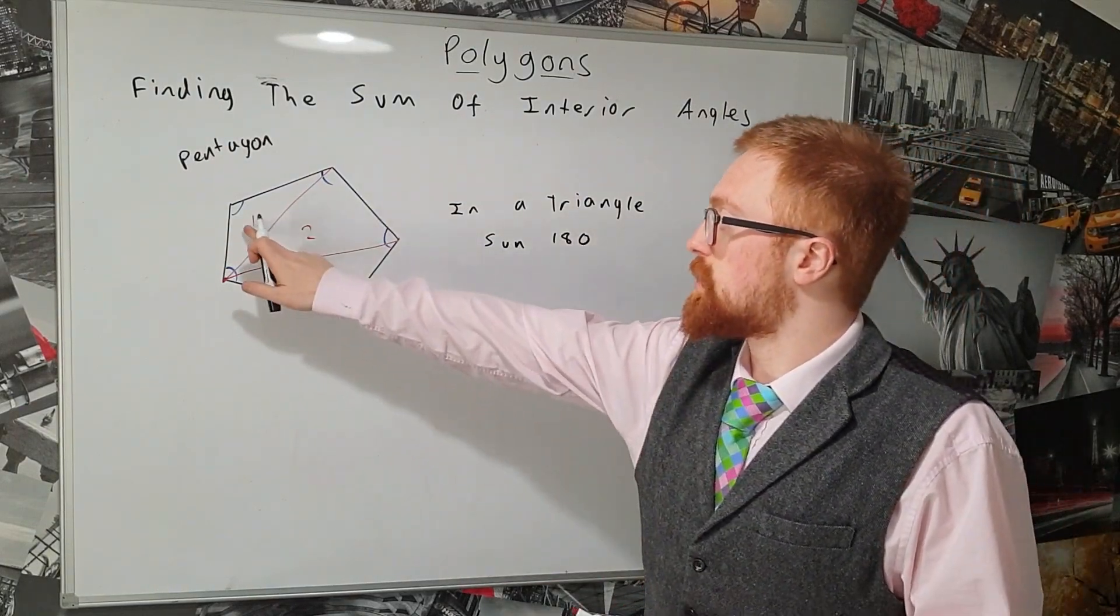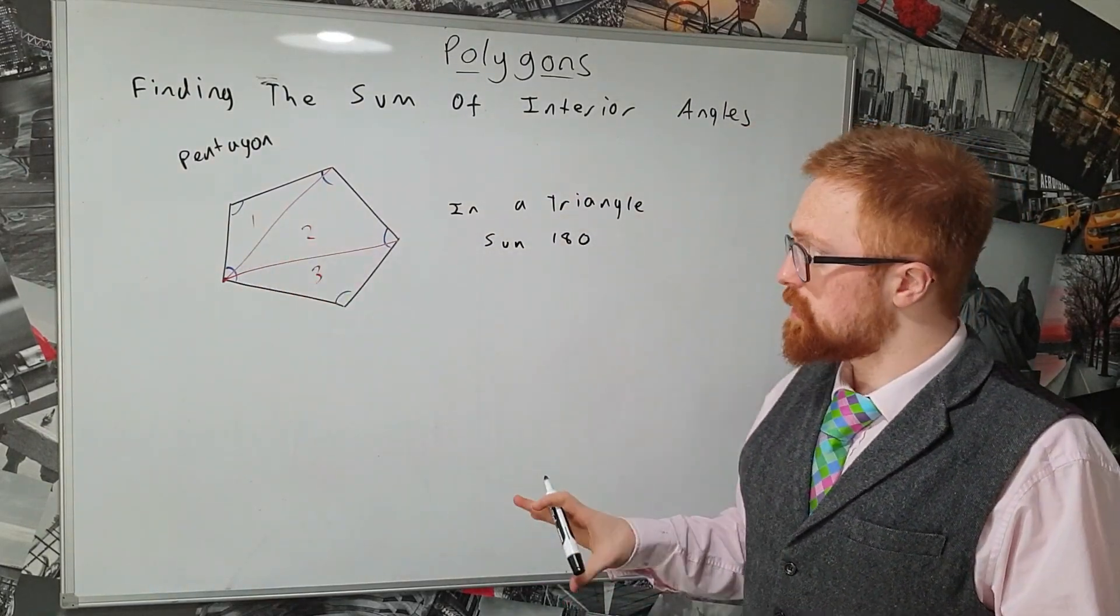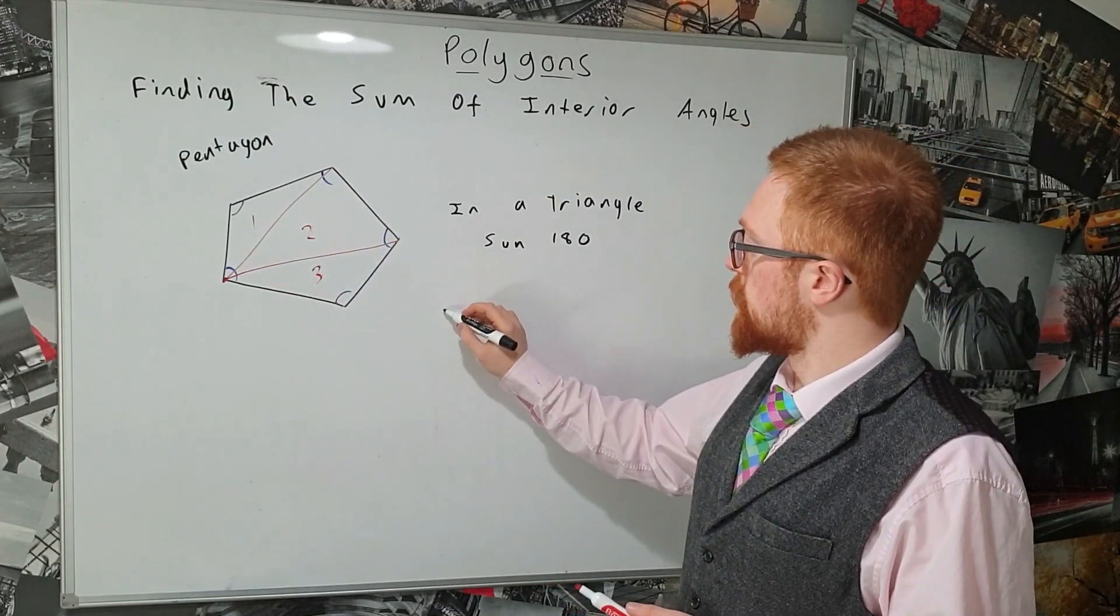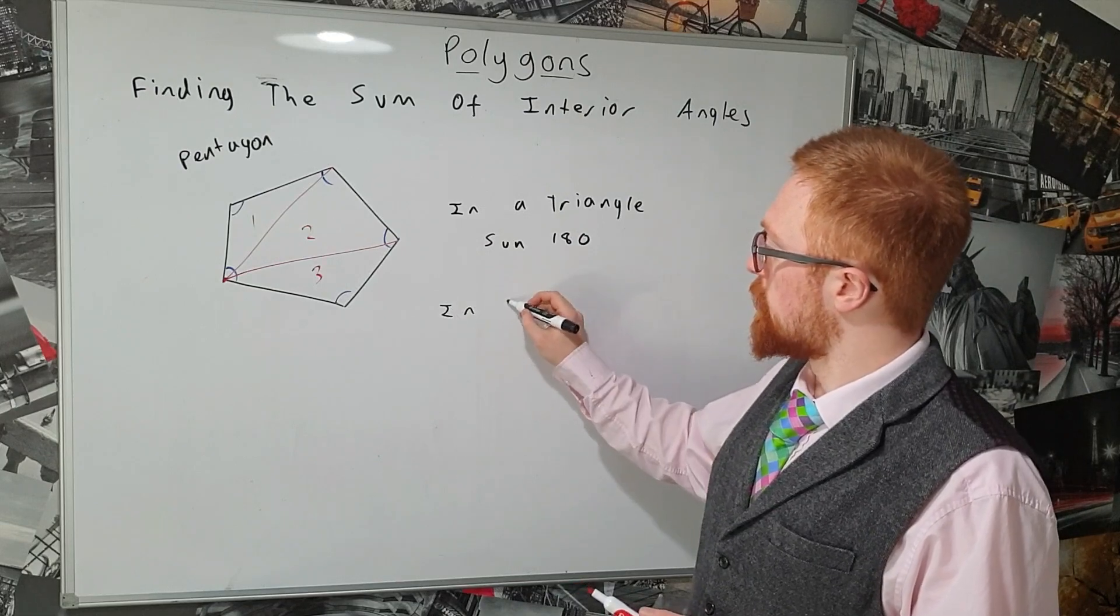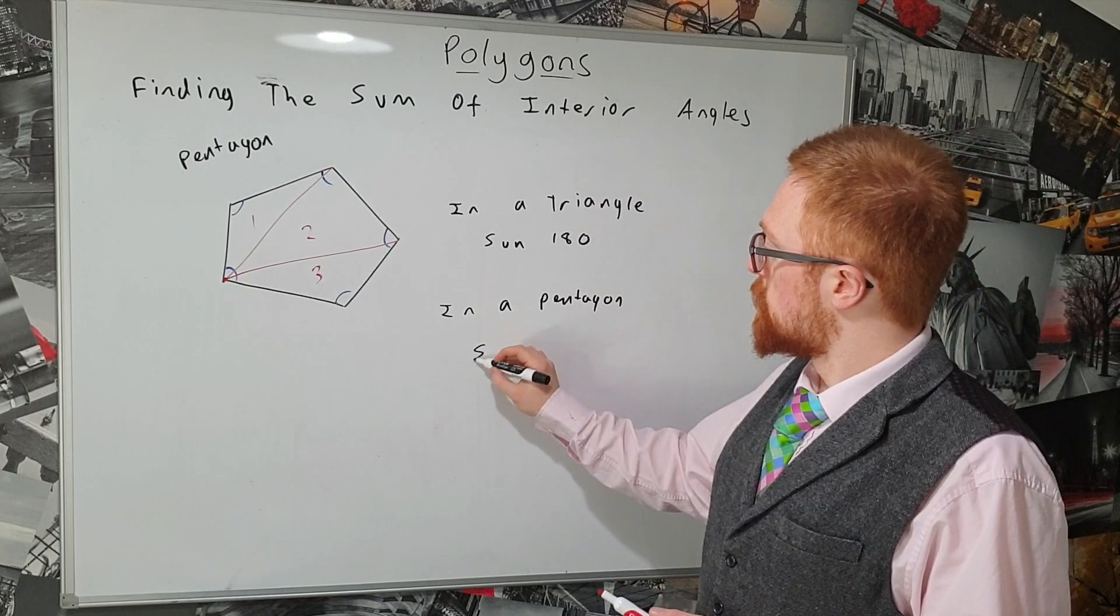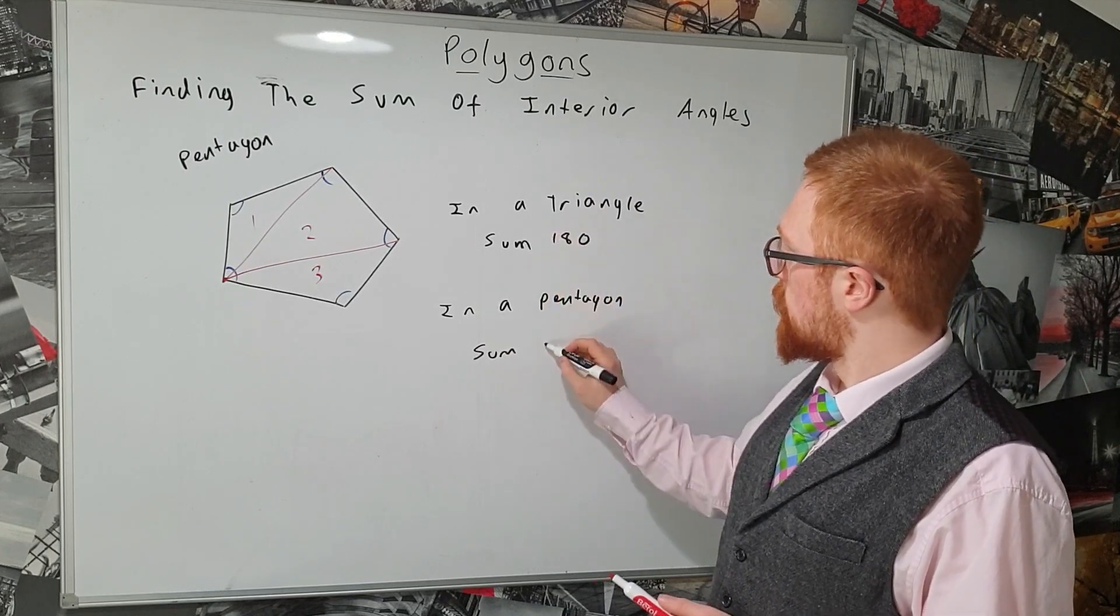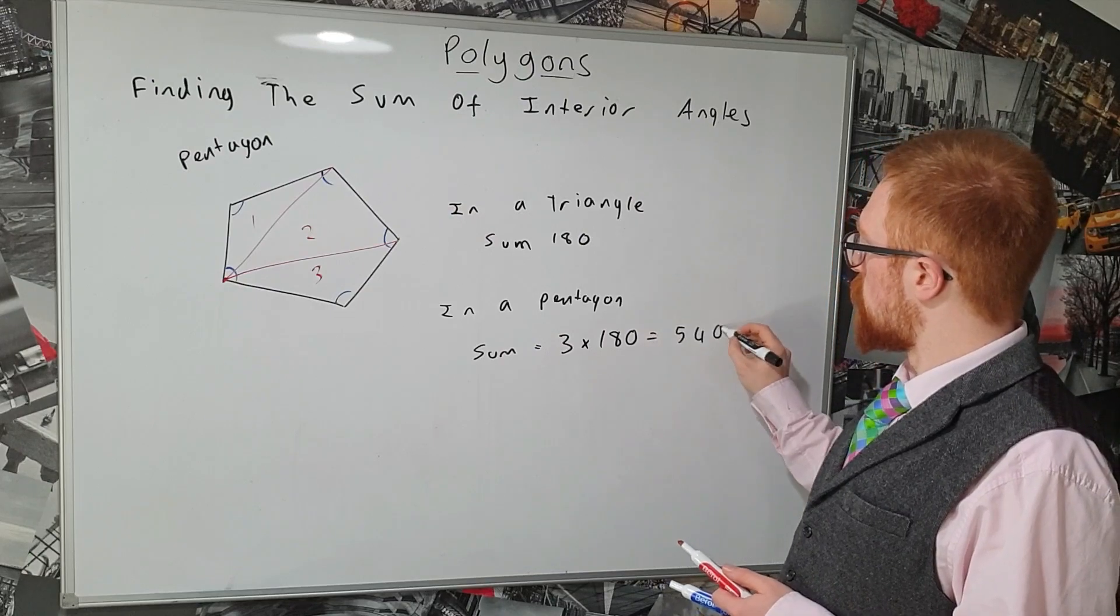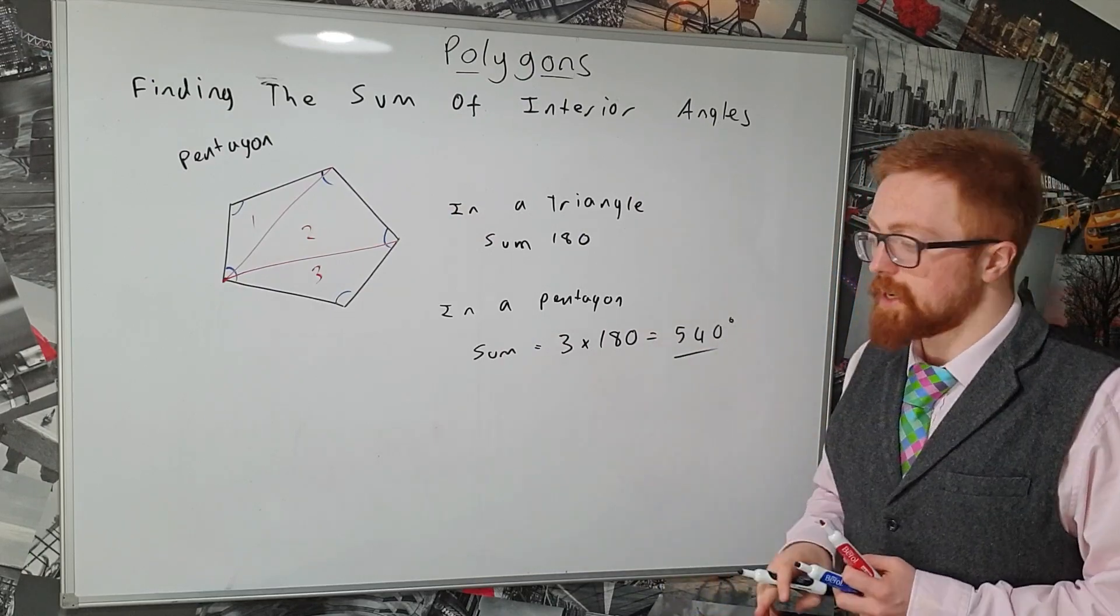So if we've split this into one, two, three triangles, that means the sum of the angles of a pentagon must be 3 times 180. So in a pentagon the sum is 3 times 180 which is 540 degrees.